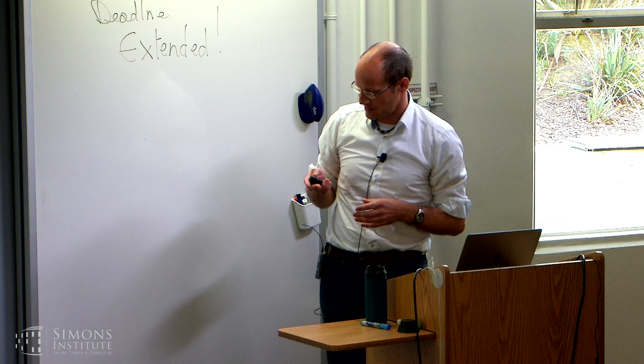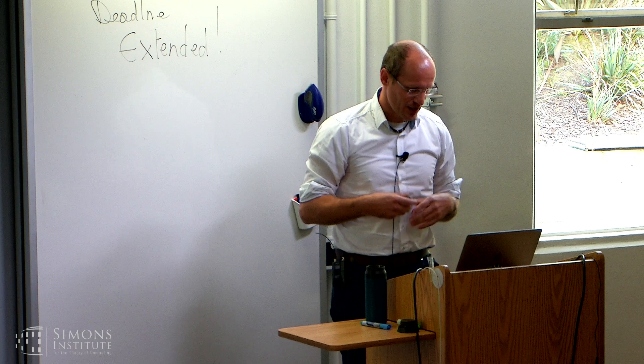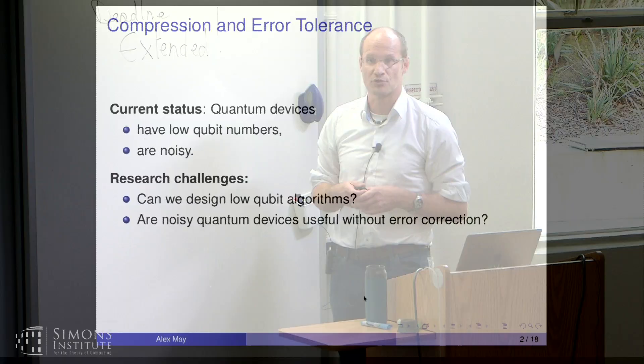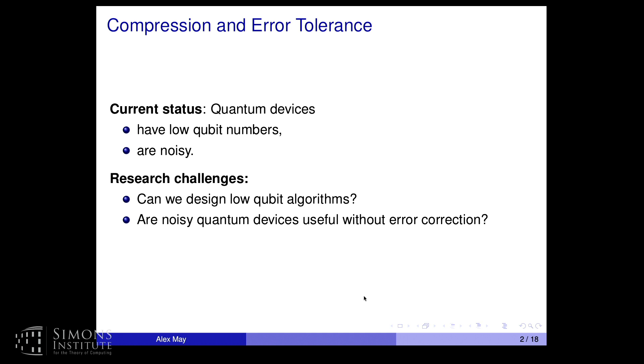The talk has two parts. First, a statement: the current status of quantum devices is that we have a very low number of qubits and also noisy devices. The big challenges are: can we design low-qubit algorithms, and can we also deal with the errors that we get from these devices?